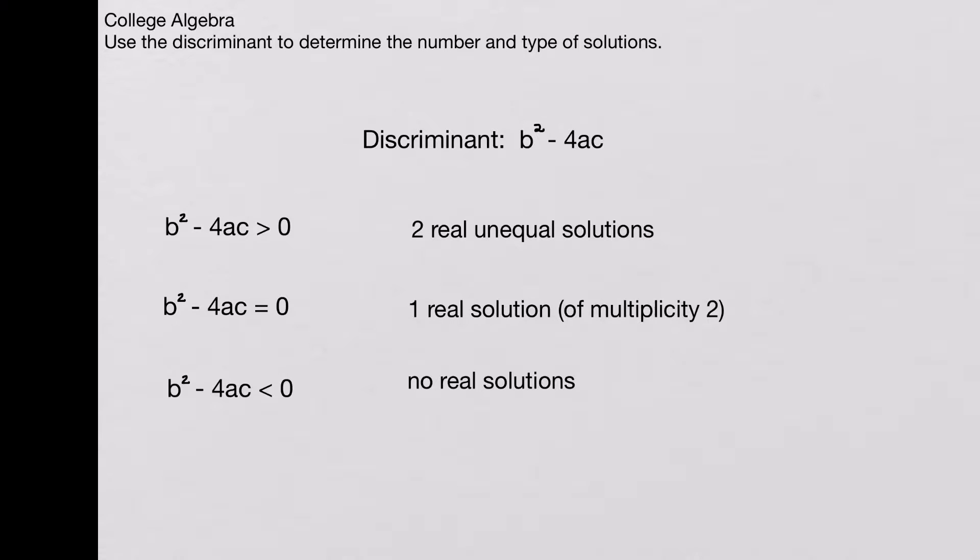So if we calculate just the discriminant, b squared minus 4ac, what we'll look for is to see is it positive, is it equal to 0, or is it negative? So this gives us three possibilities.